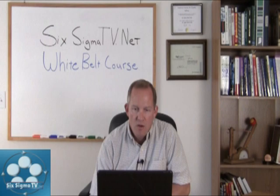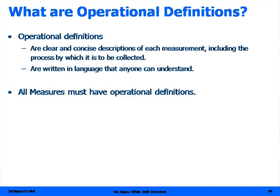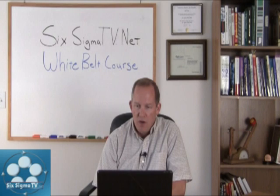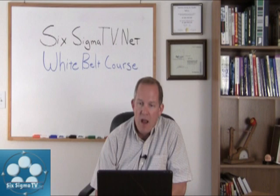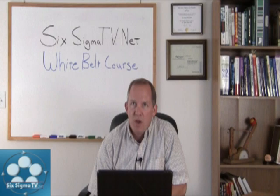For each of these measurements, we want to come up with what we call operational definitions — clear and concise descriptions of each of the measurements, including the process by which they're going to be collected, written in a language everybody can understand. All measures must have operational definitions. Operational definitions translate what you want to know into something that you can observe and measure, and ensure everybody knows how to take those measurements using the same language.